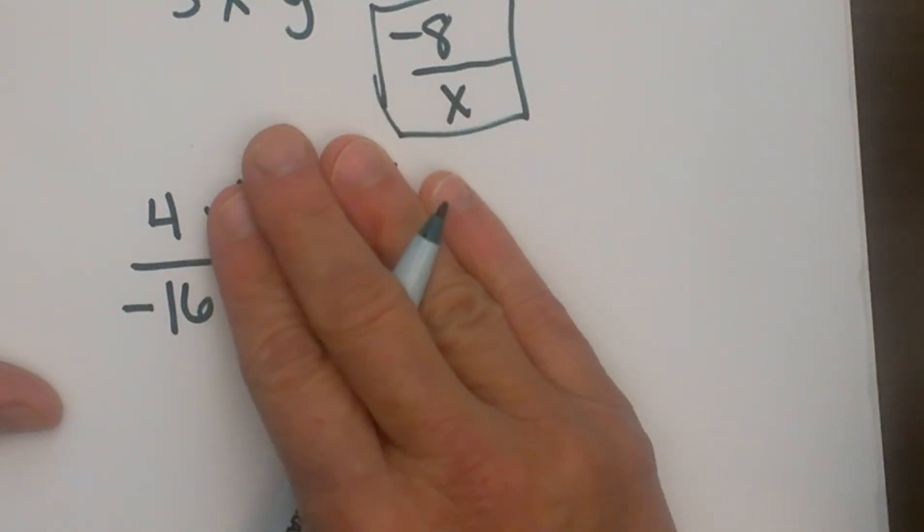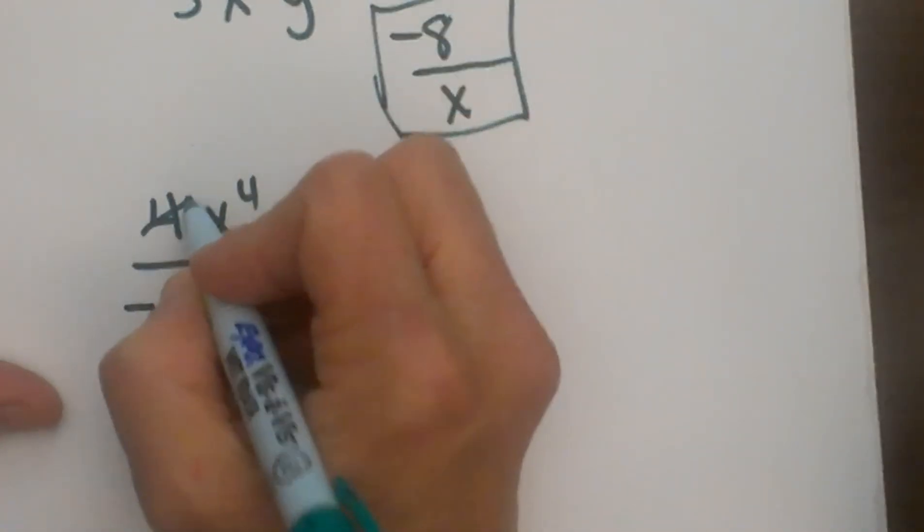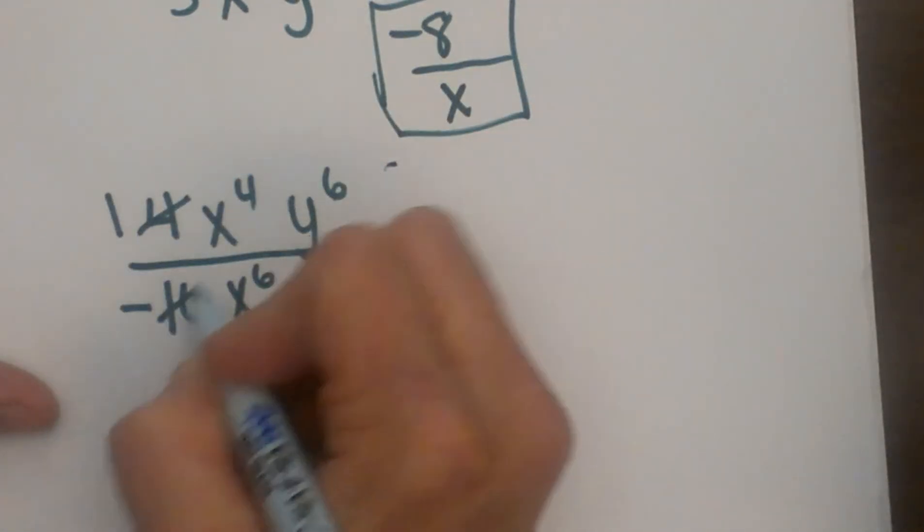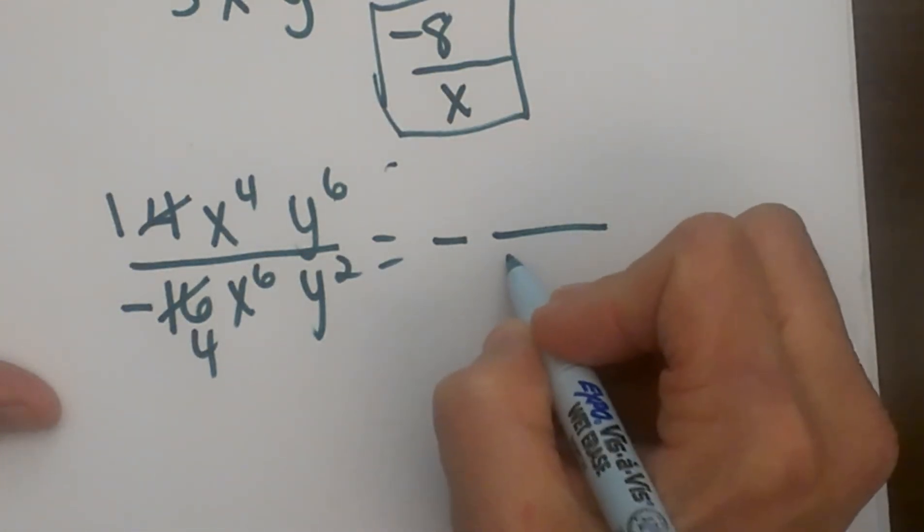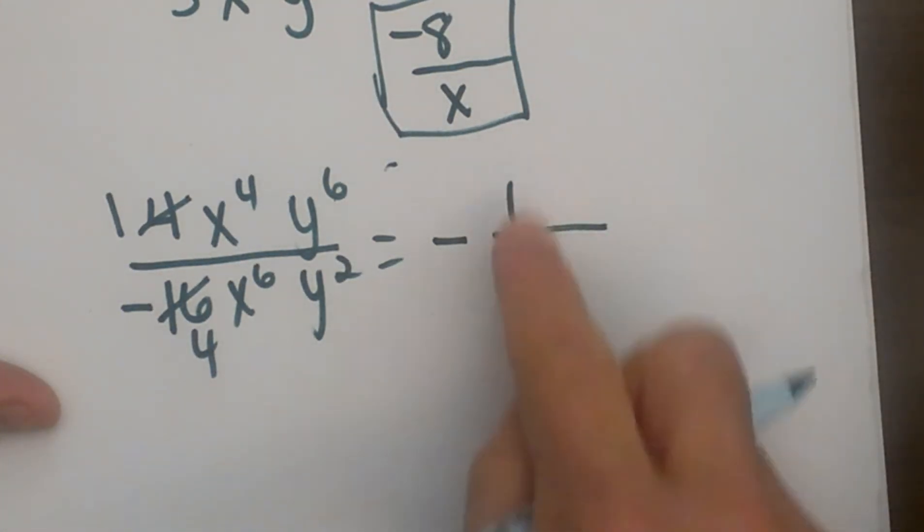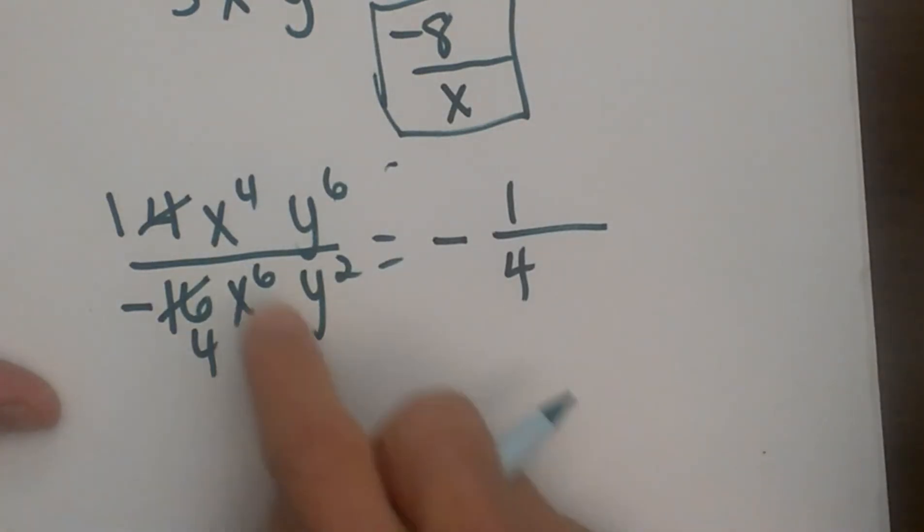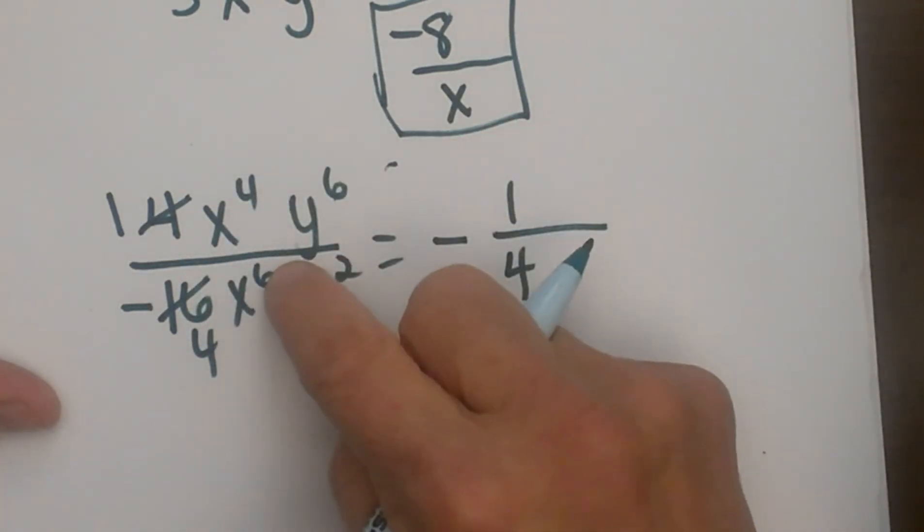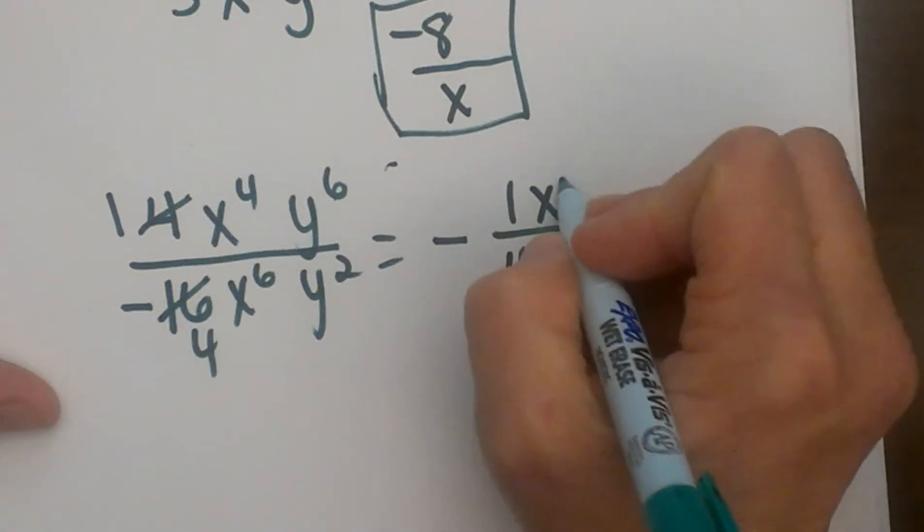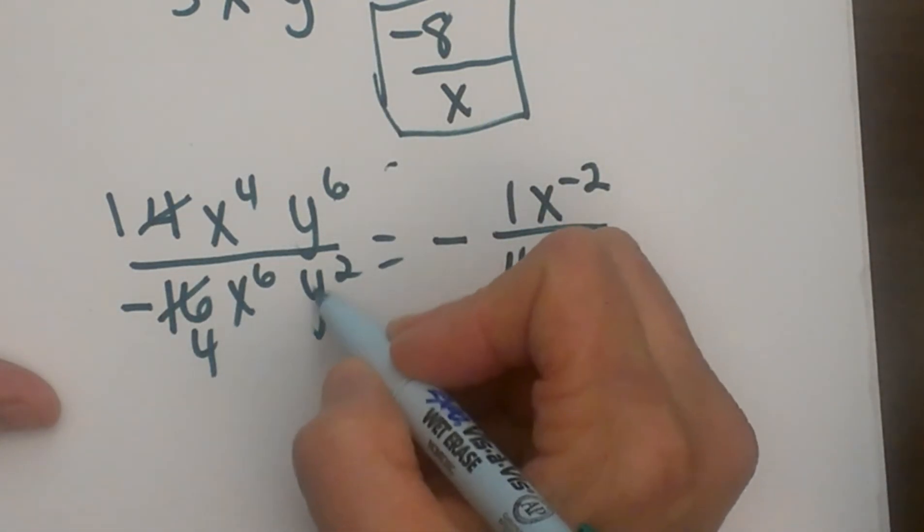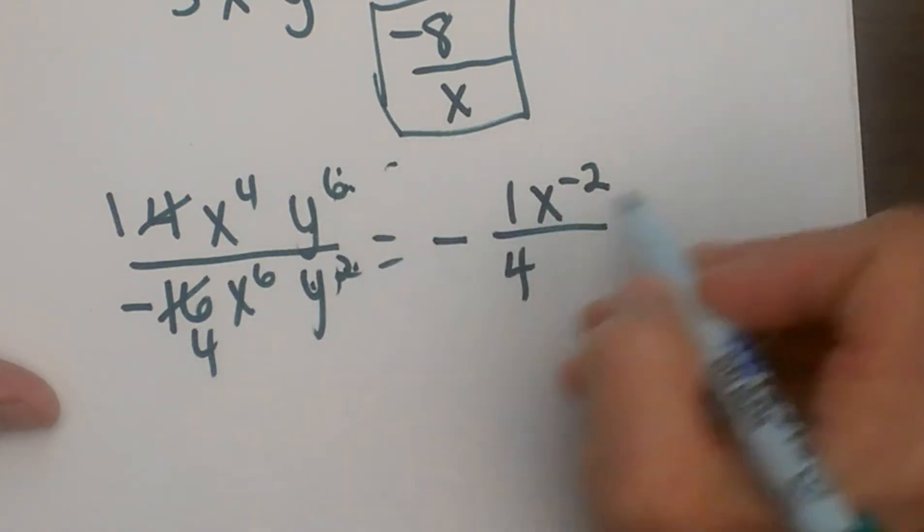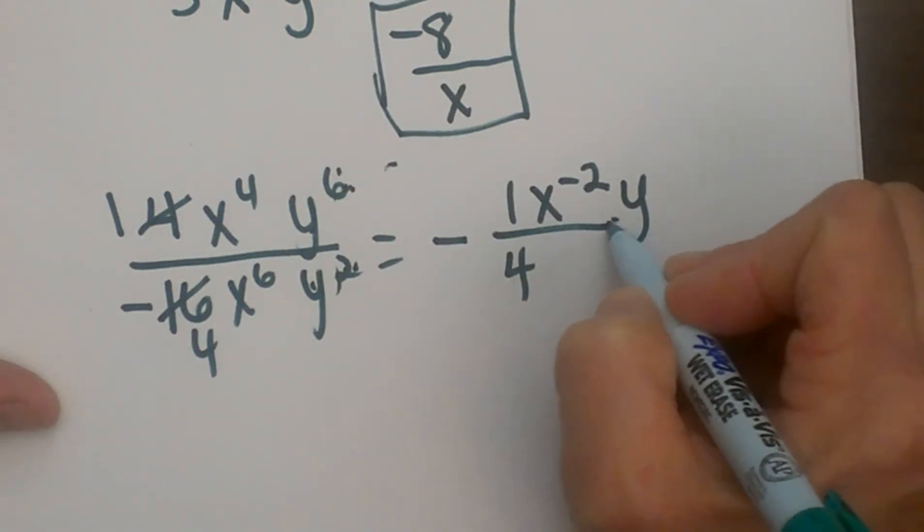Since the larger number is in the denominator, that is just going to reduce to a fraction, and that reduces to, divide by 4, divide by 4, so it reduces to 1 fourth. So I have negative 1 fourth. x to the fourth and x to the sixth, that is going to give me x to the negative second. x to the sixth minus... y to the sixth divided by y to the second, subtract those and I get y to the fourth.